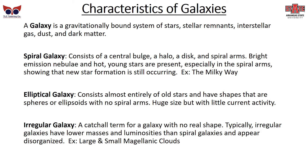The most common is probably the spiral galaxy. It has a central bulge and a halo, a disk, and then spiral arms. Bright emission nebulae and hot young stars are present, especially in the spiral arms, showing that new star formation is occurring. Our own galaxy, the Milky Way, is a spiral galaxy.